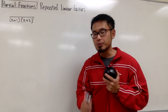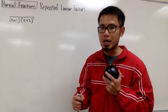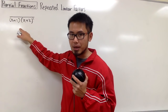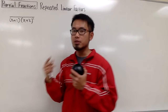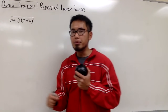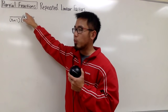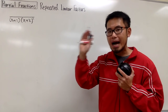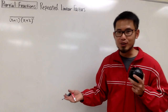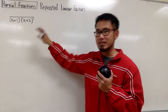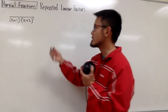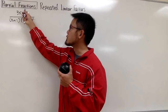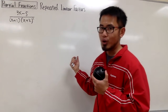Now, pay attention: you have to look at the degree on the top and also the degree on the bottom. The degree on the top has to be lower than the degree on the bottom. In our case, the degree on the bottom is 3, so the top can be degree 0, 1, or 2. If the degree on top is the same or higher, you have to do long division first. But our focus is the setup, so let me just put down 3x minus 5 on the numerator — degree 1 on top, degree 3 on bottom, so this works.